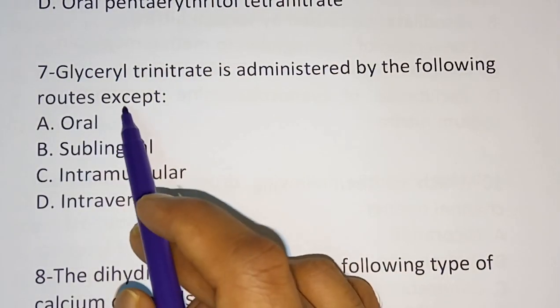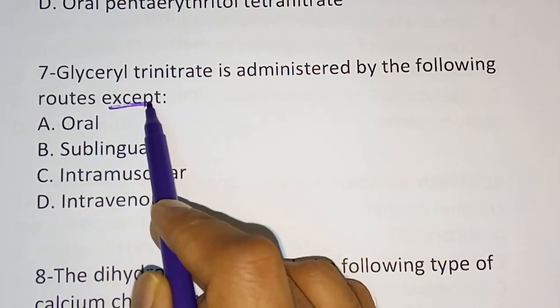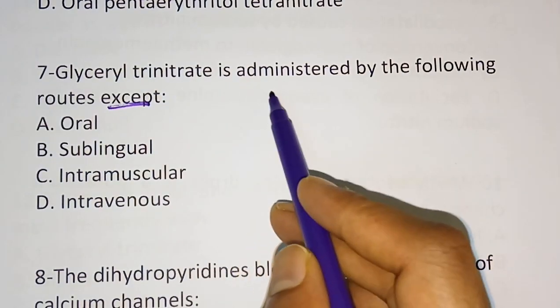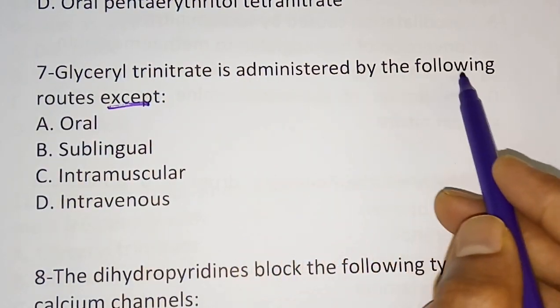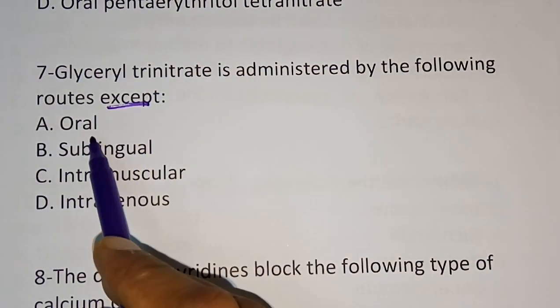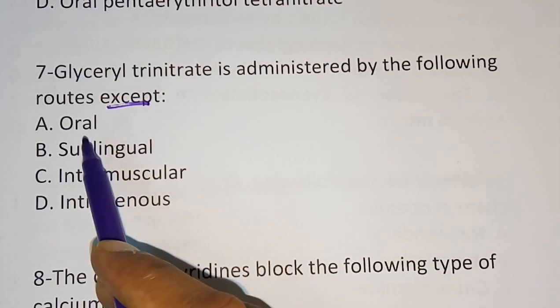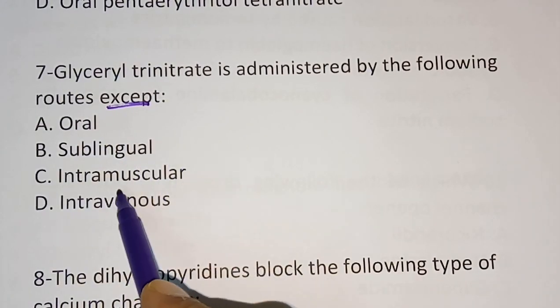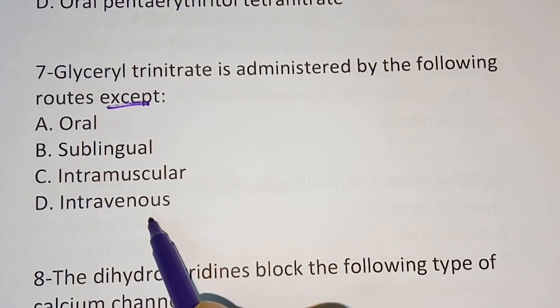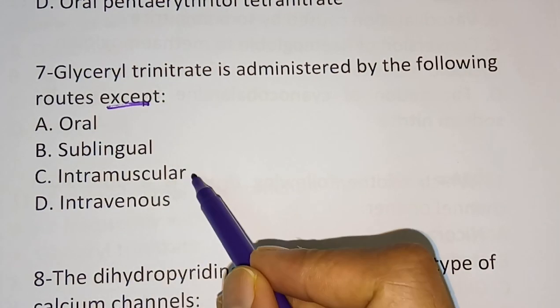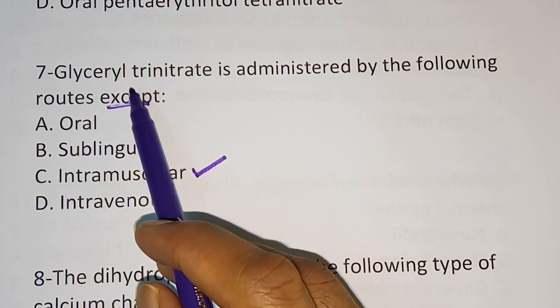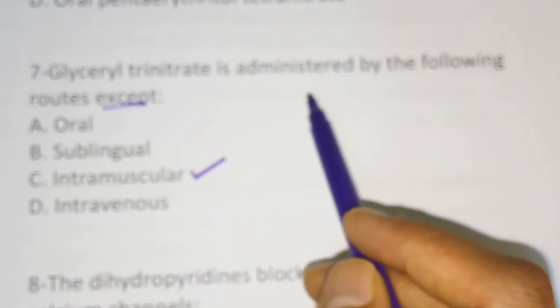Question seven: glycerol trinitrate is administered by the following routes EXCEPT which? Routes include oral sprays, sublingual tablet, intramuscular injection, and intravenous injection. The correct answer is intramuscular — glycerol trinitrate is not administered via intramuscular injection.